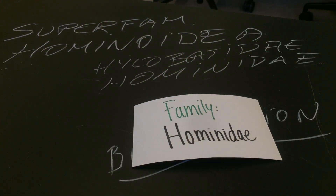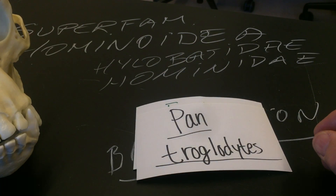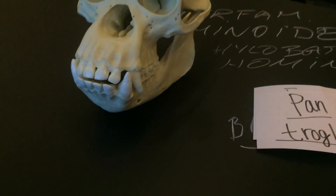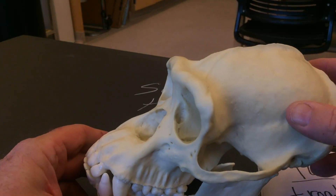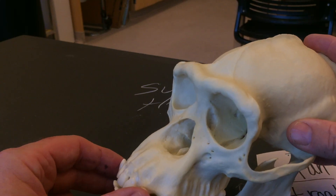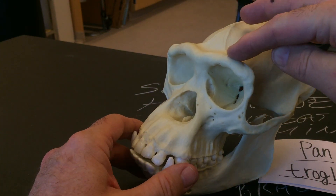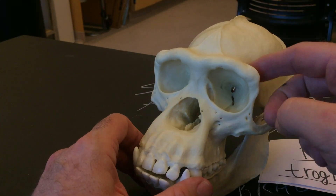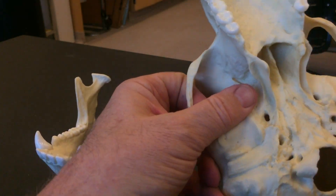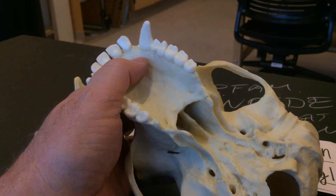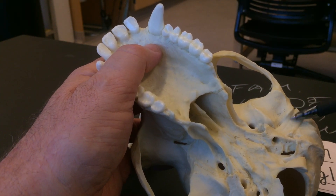We just have the family Hominidae, and we have the chimpanzee skull here — this is Pan troglodytes. It's a big skull, and you can see how it's a bigger version of what we just saw for the macaque. This is a model of a chimpanzee skull with a very well-developed supraorbital ridge. The eye sockets are completely separated from the temporal fossa, and you've got that bony auditory tube we talked about on both sides.